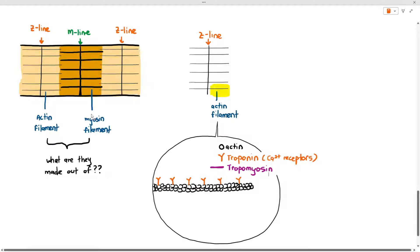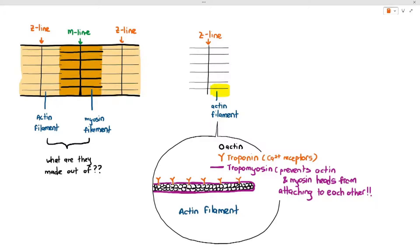What I like to do is represent the tropomyosin as something that is covering the bottom and the top of the actin filament. In reality it doesn't do that but I'm just going to represent it like that. You just have to know that the function of the tropomyosin is to prevent the actin filament and the myosin heads from attaching to each other.